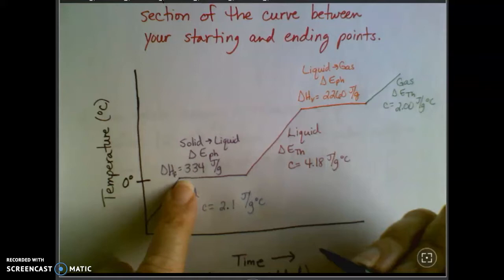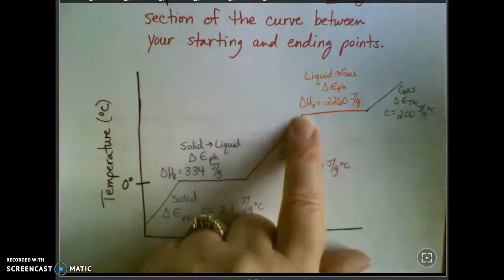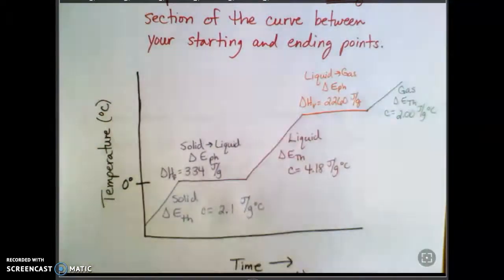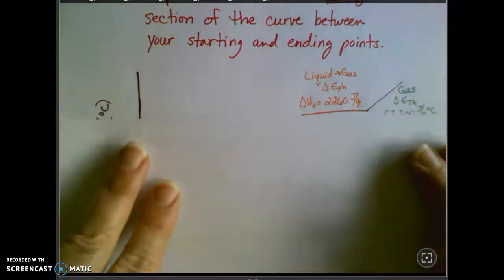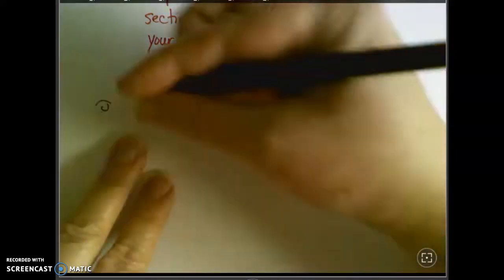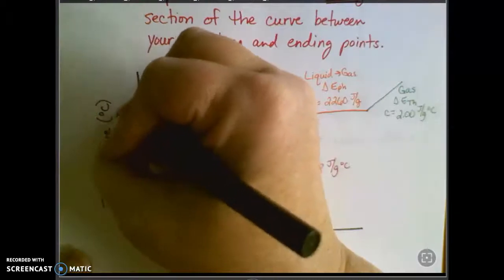So I know that this lower plateau, this lower flat part, is at zero degrees Celsius. Water boils at a hundred degrees, and so I know that's this upper phase change. So that point on my graph is 100 degrees.